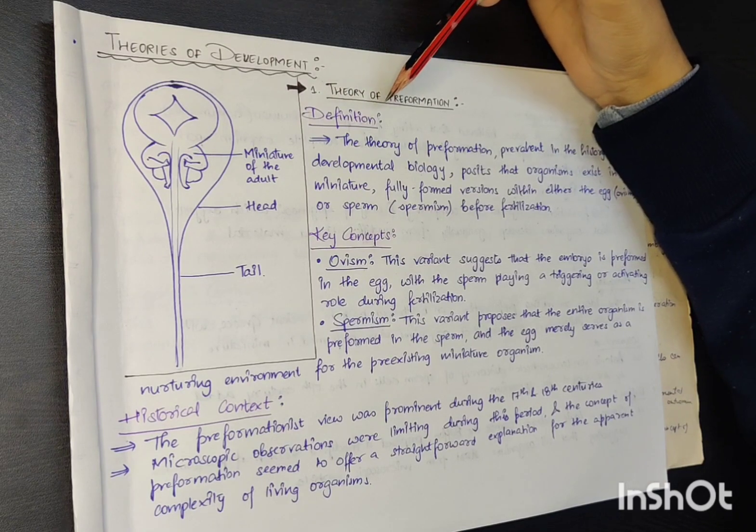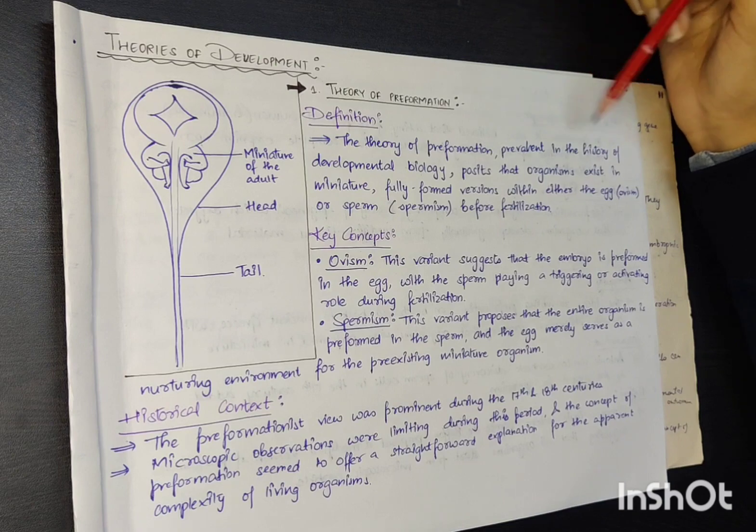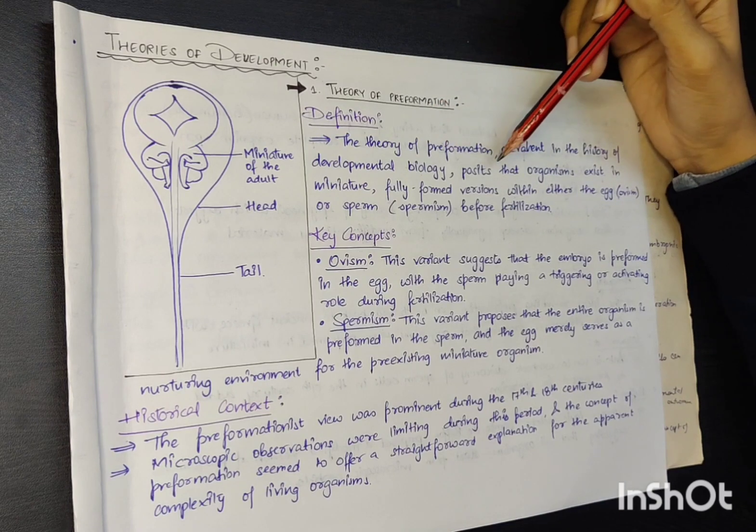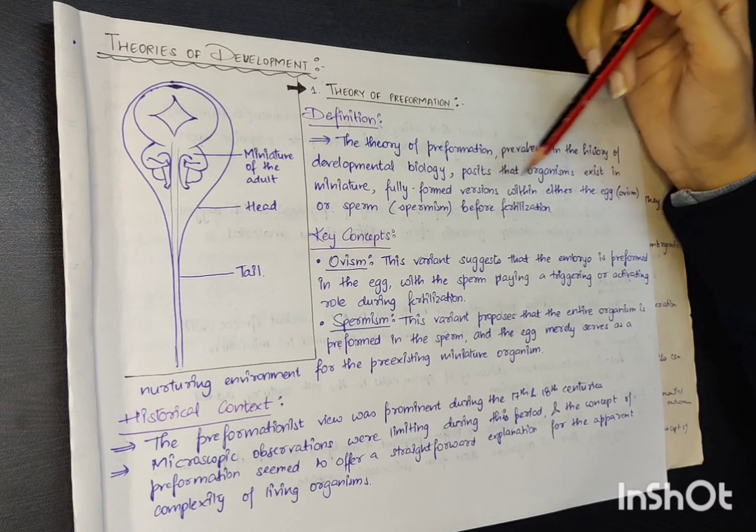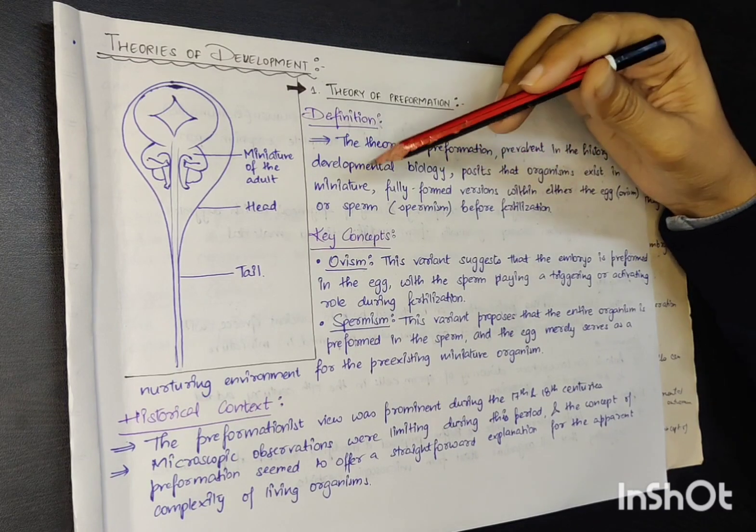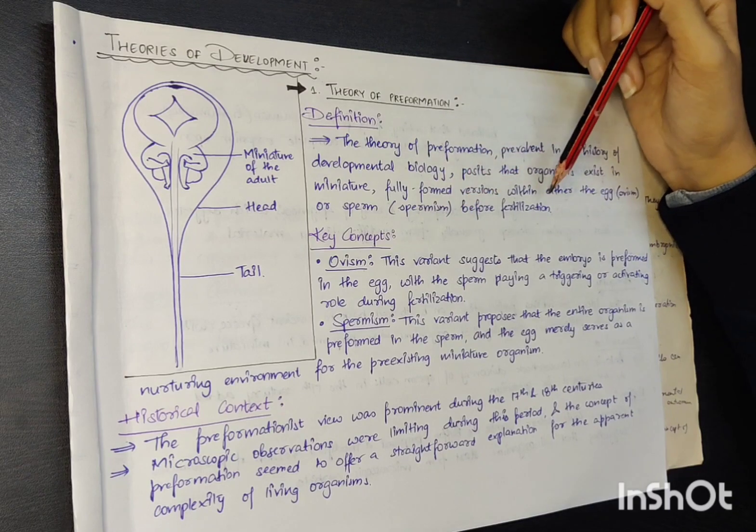The definition here is the theory of pre-formation, prevalent in the history of developmental biology, posits that organisms exist in miniature, fully formed versions within either the egg (i.e., ovism) or sperm (i.e., spermism) before fertilization.